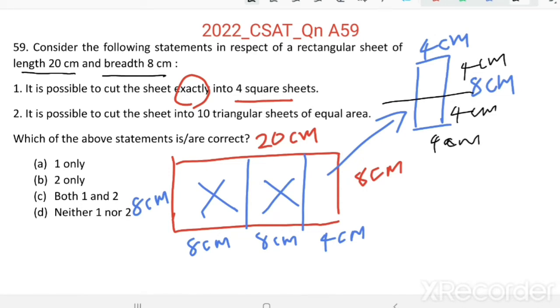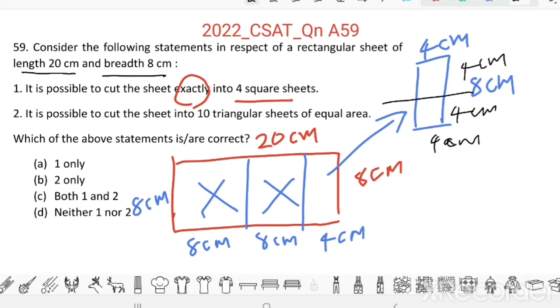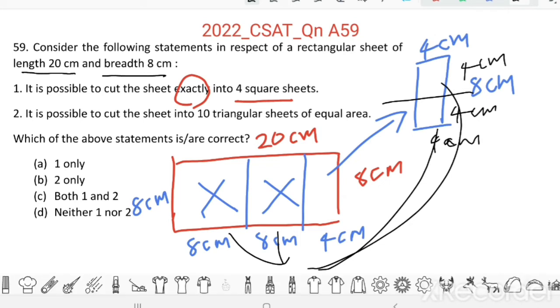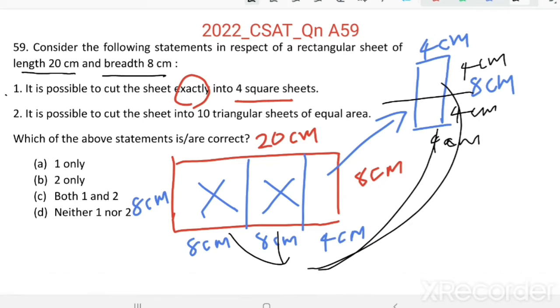So the statement is it is possible to cut the sheet exactly into 4 square sheets, and we could cut 4 square sheets from this 20 by 8 rectangular sheet. The statement 1 is true.